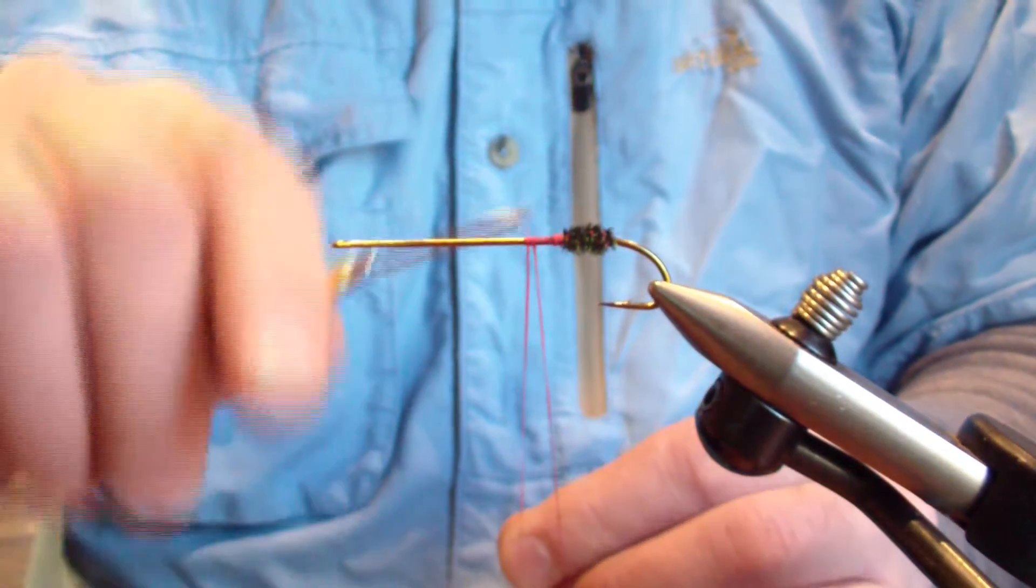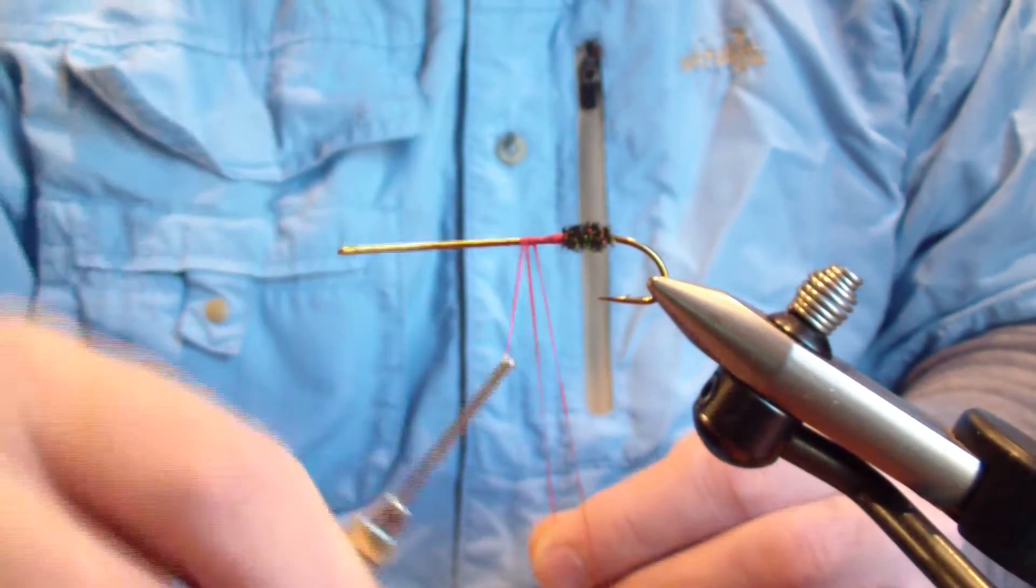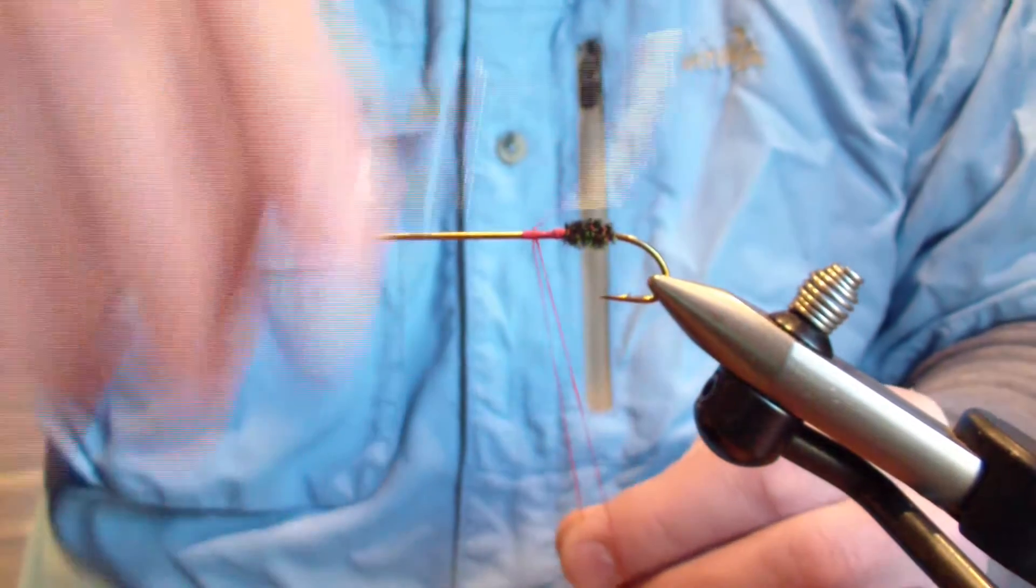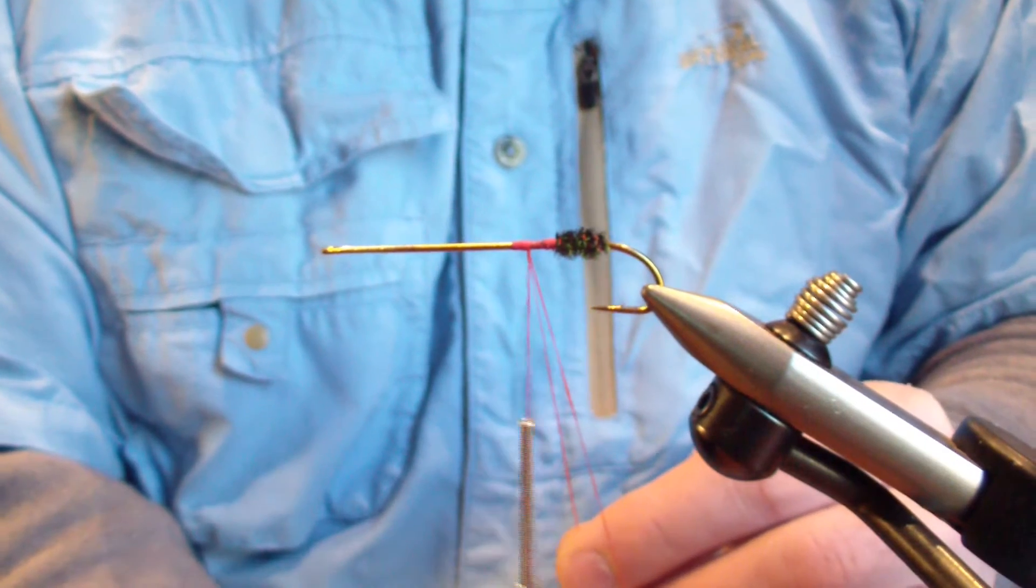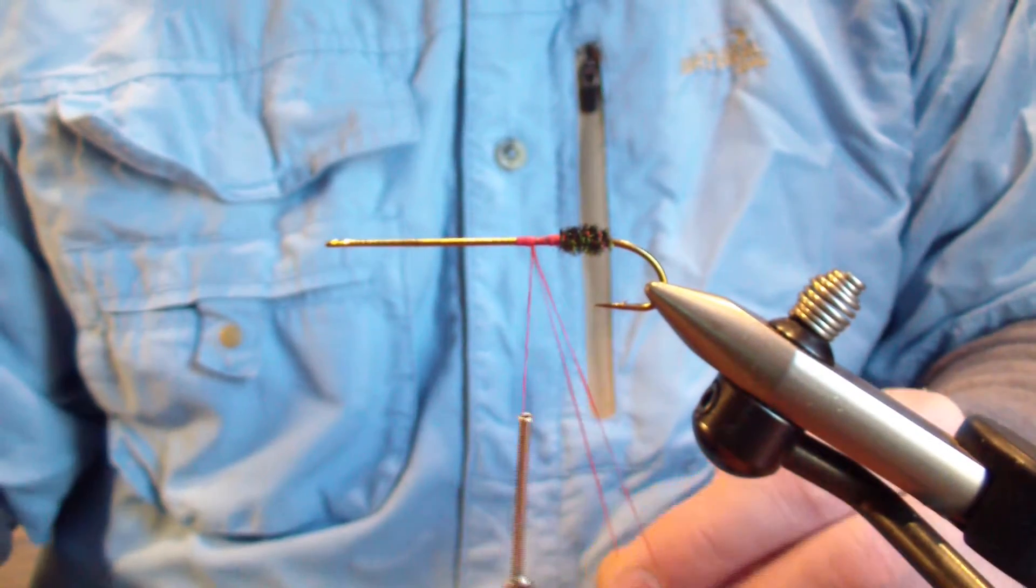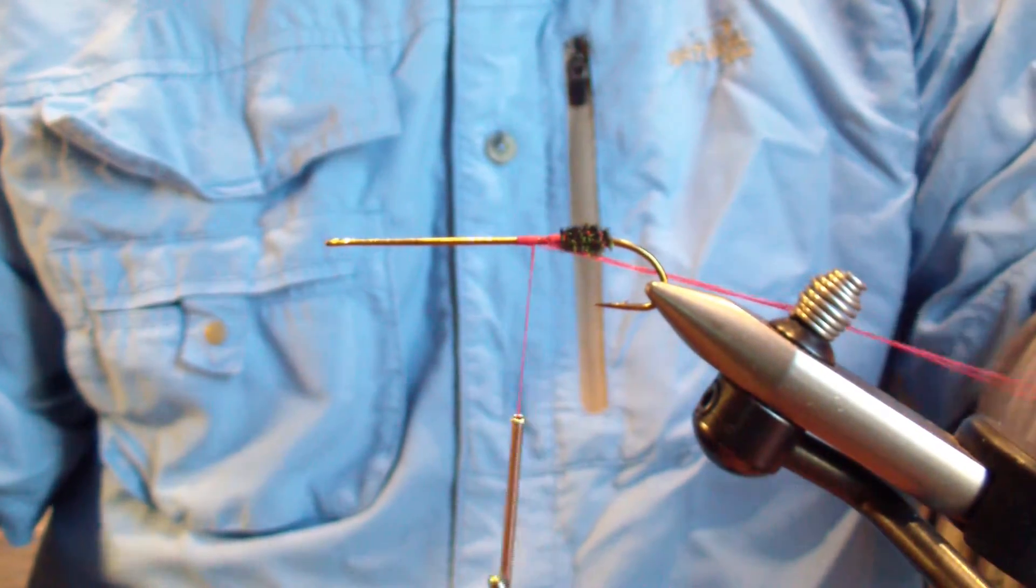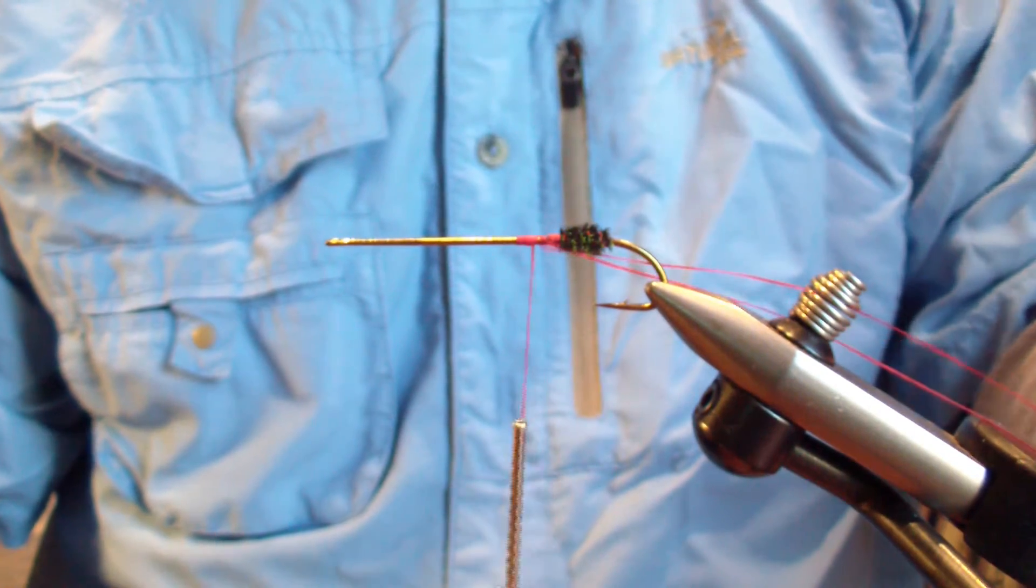Again, I'm going to form my thread loop. I'm going to move my vise there and I'm going to take it and pull it off to the side.